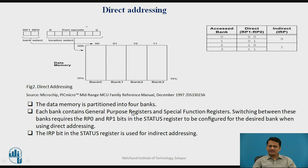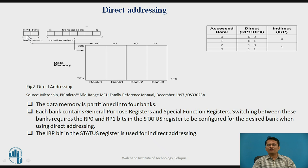Now let us understand what is direct addressing. In direct addressing, the address is available in the instruction directly. Regarding data memory organization, we have four different banks, each bank of 128 bytes. To uniquely address each location, you require a 9-bit address. In direct addressing, 7 bits of the address are provided in the instruction itself, and the remaining 2 bits are taken from RP0 and RP1 of the status register, concatenated to form a 9-bit address.